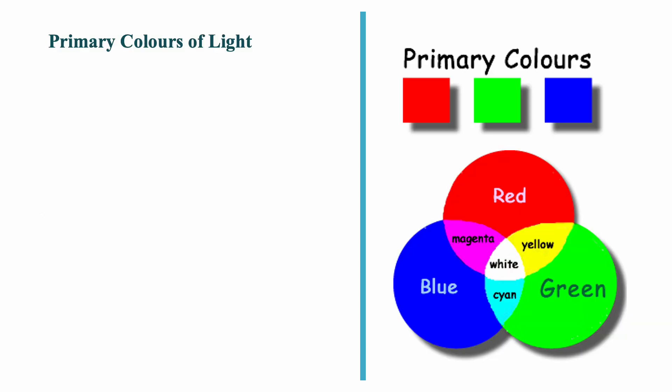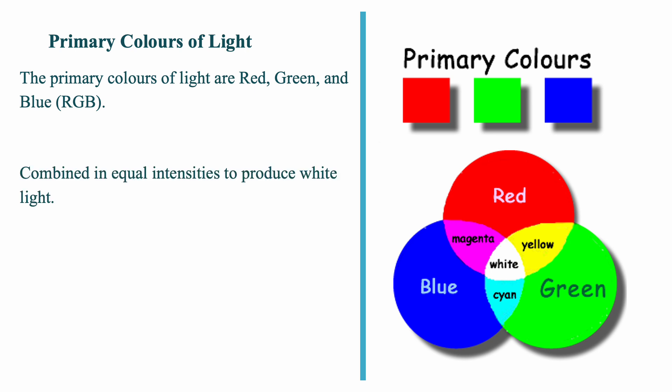The three primary colors of light are red, green and blue, also called RGB. These are the building blocks of all other colors on screens and digital devices. When combined in equal intensities, these three colors RGB produce white light.